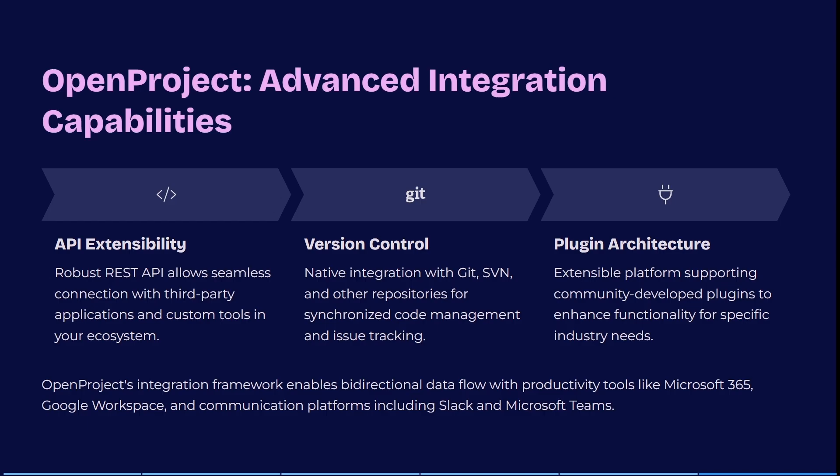OpenProject has an extendable platform with community-developed plugins to enhance functionality for specific industry needs. Its integration framework enables bidirectional data flows with productivity tools like Microsoft 365, Google Workspace, and communication platforms including Slack, Microsoft Teams, and many more.